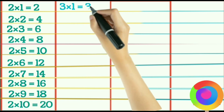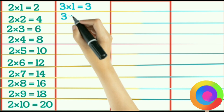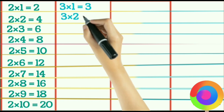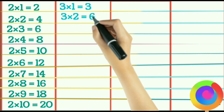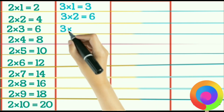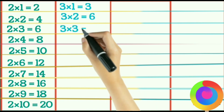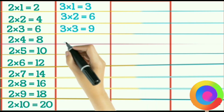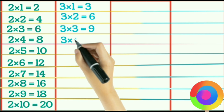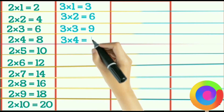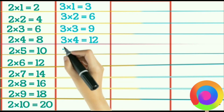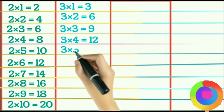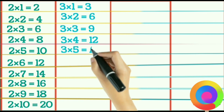3×1 is 3, 3×2 is 6, 3×3 is 9, 3×4 is 12, 3×5 is 15.